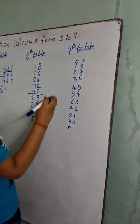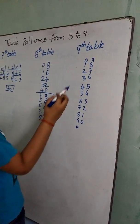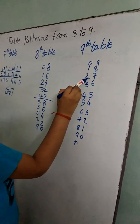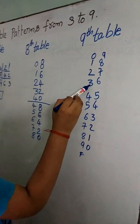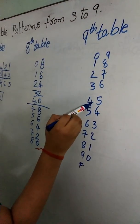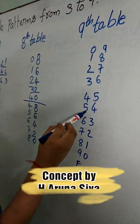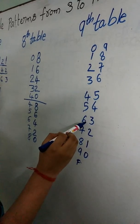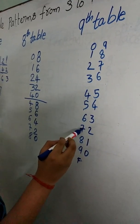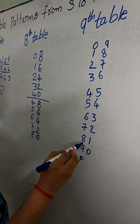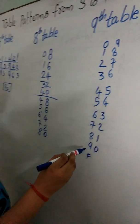This is the 9th table: 9 ones are 9, 9 twos are 18, 9 threes are 27, 9 fours are 36, 9 fives are 45, 9 sixes are 54, 9 sevens are 63, 9 eights are 72, 9 nines are 81, 9 tens are 90.